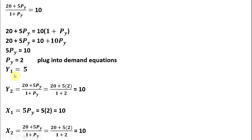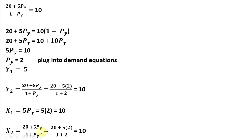With Py = 2, we have y1 equal to 5. For consumer 2, substituting the price of good y of 2, we see that y2 equals 10. For the demand for good x for consumer 1, 5 times the price of good y simplifies to 10. And for consumer 2, evaluating at Py = 2, x2 also equals 10.